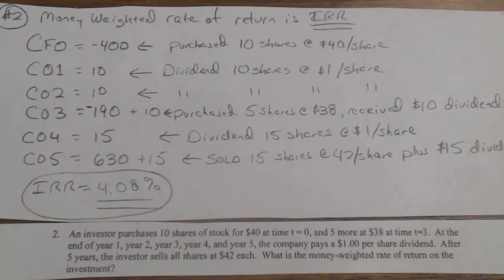At the end of year 1, 2, 3, 4, and 5, the company pays a $1 per share dividend, and after 5 years the investor sells all shares at $42 each. What is the money-weighted rate of return of the investment?